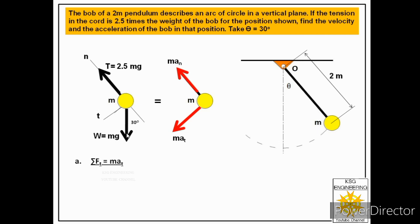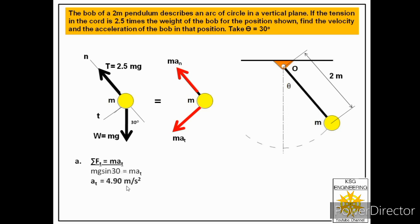We have two forces in the free body: one acting along the normal, and the weight acting at 30 degrees to the normal. We resolve the weight into components: mg·cos30° along the normal, and mg·sin30° along the tangent. Only one force acts tangentially — mg·sin30° — so mg·sin30° equals m·at. Mass m cancels, giving the tangential acceleration at equals 4.90 m/s².